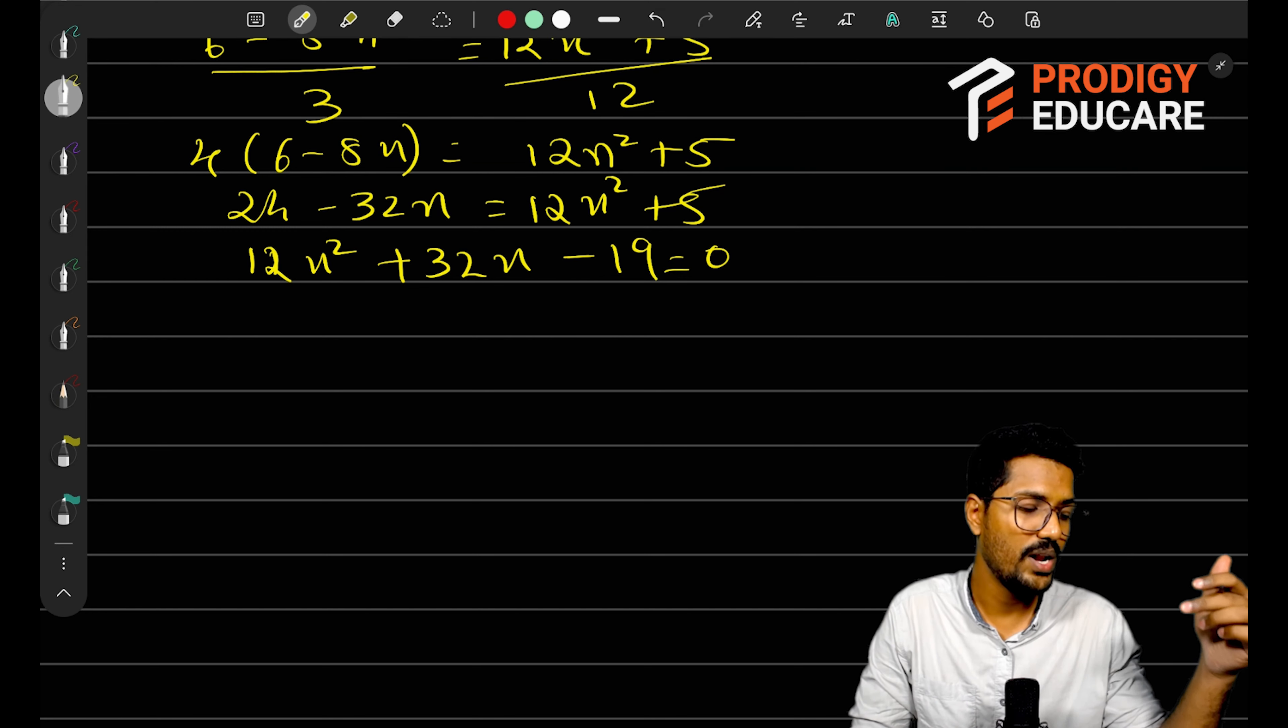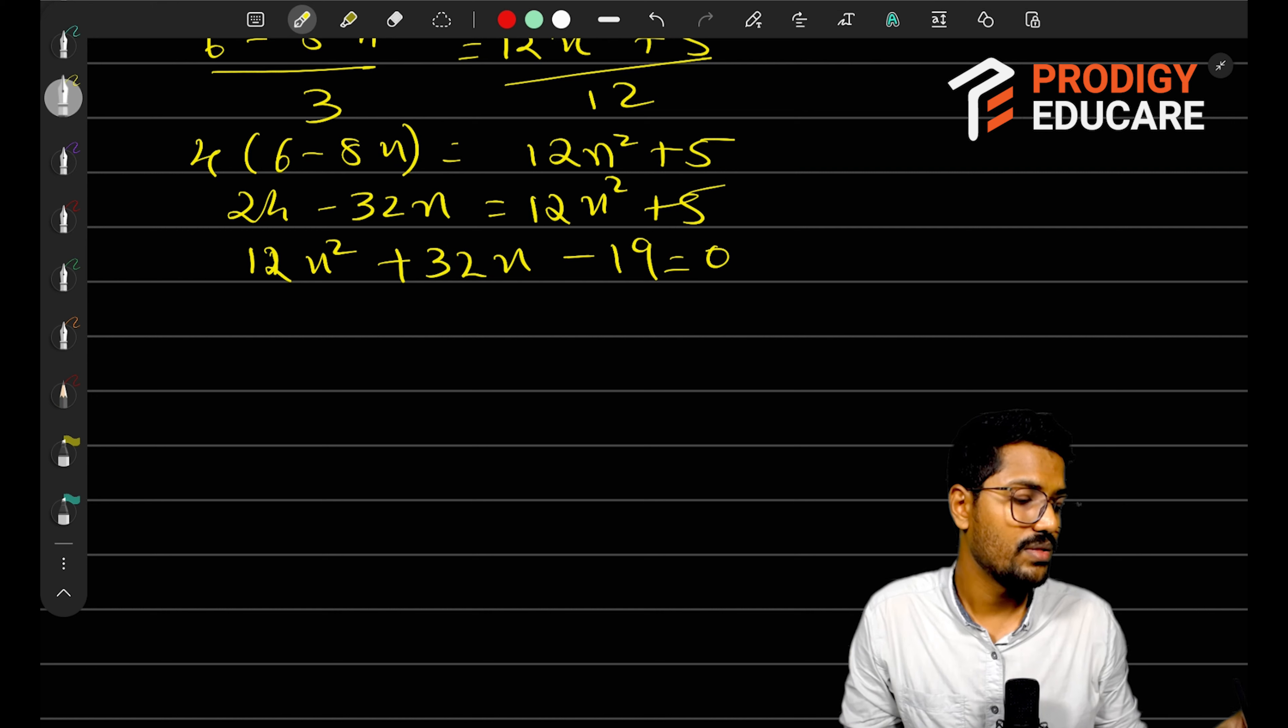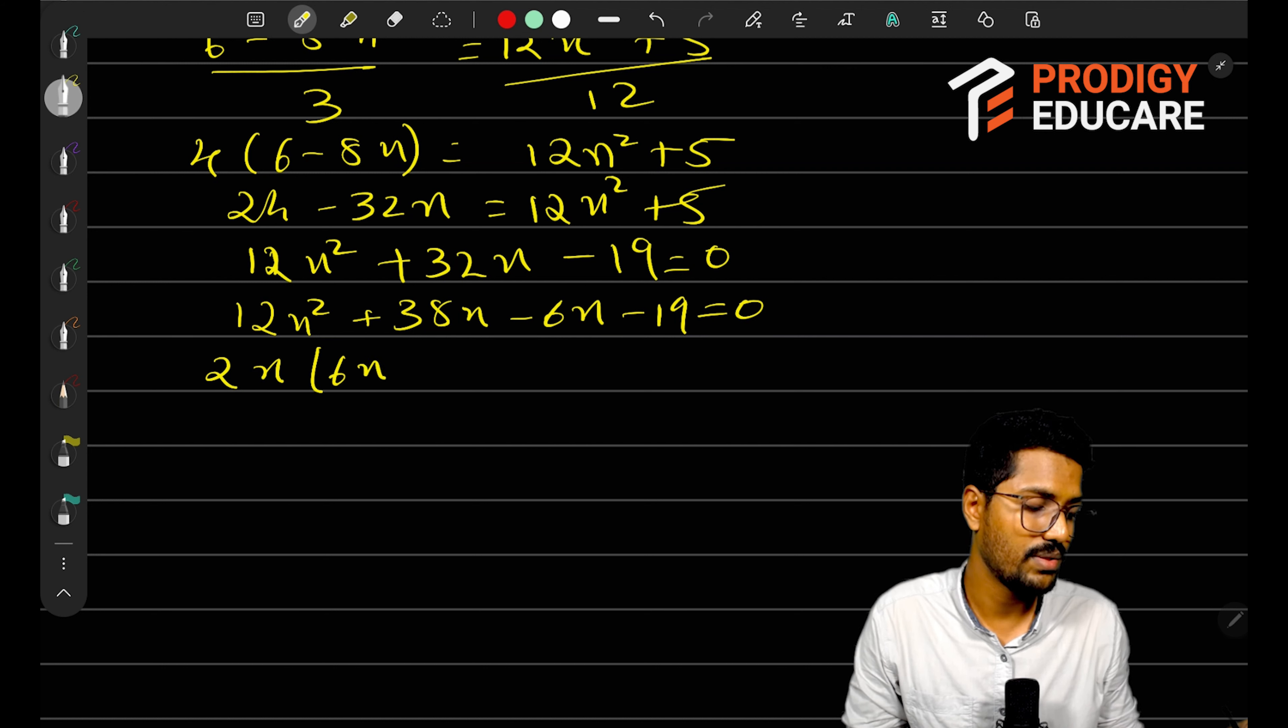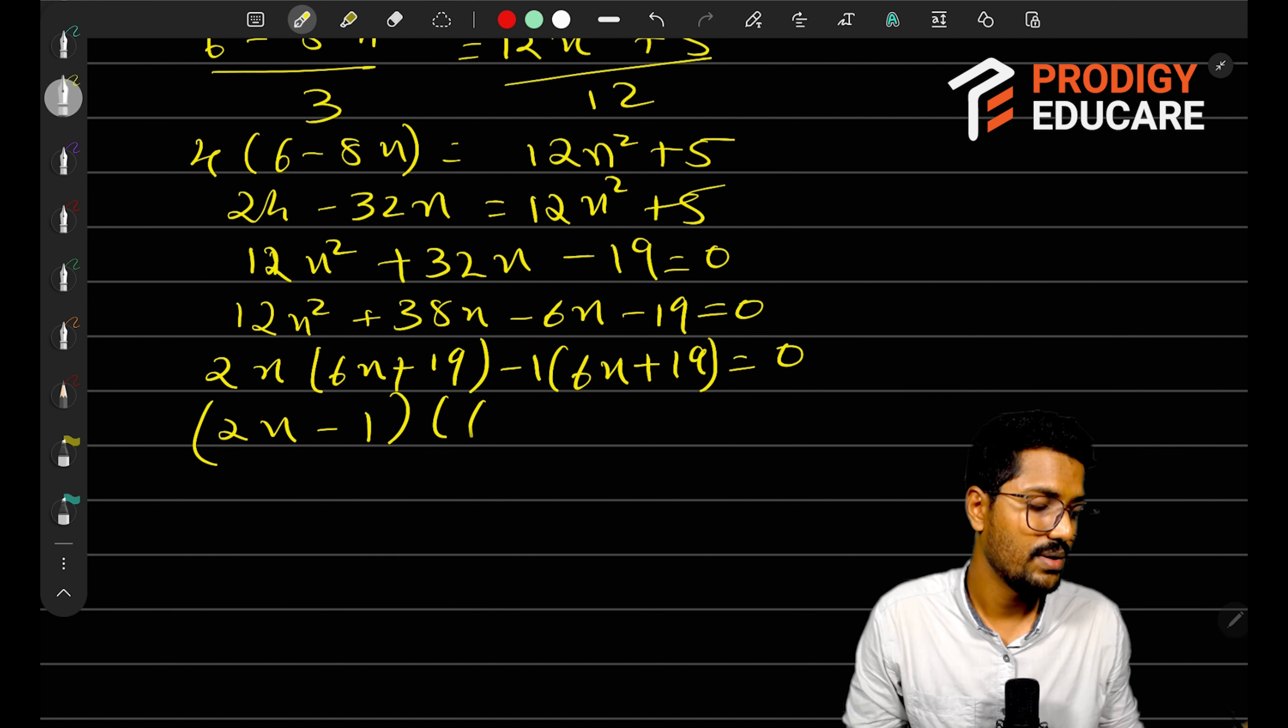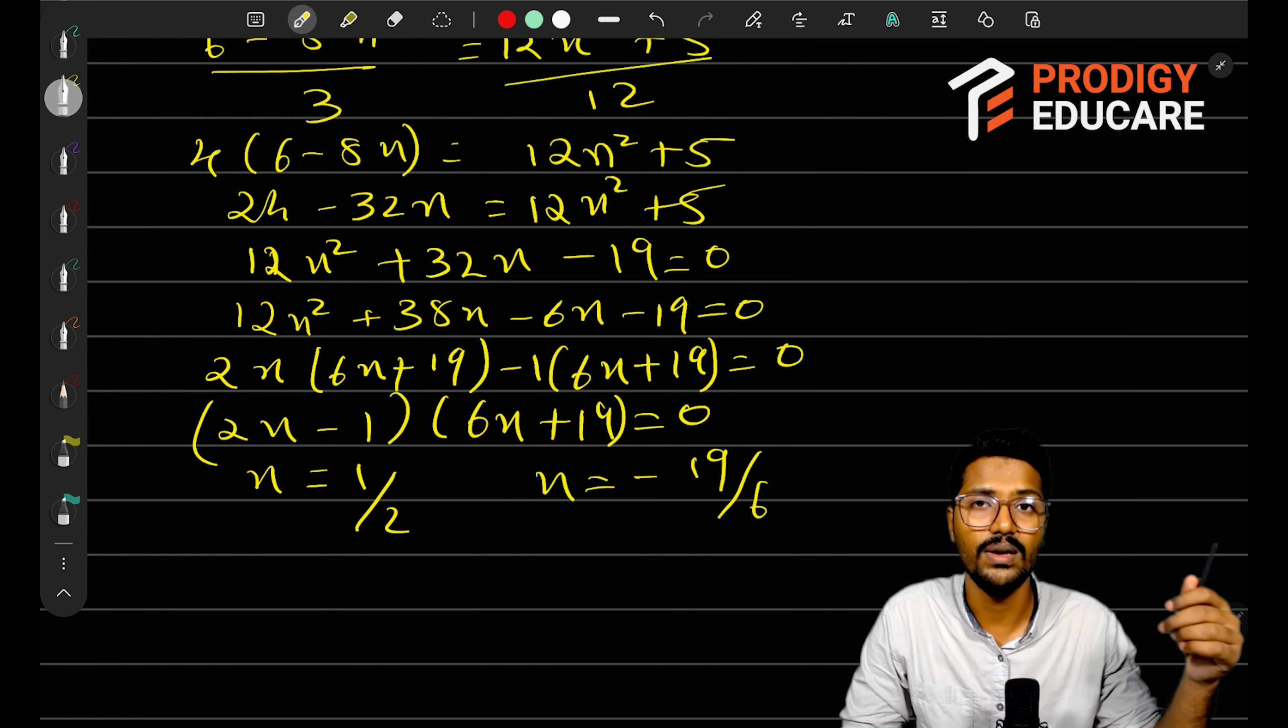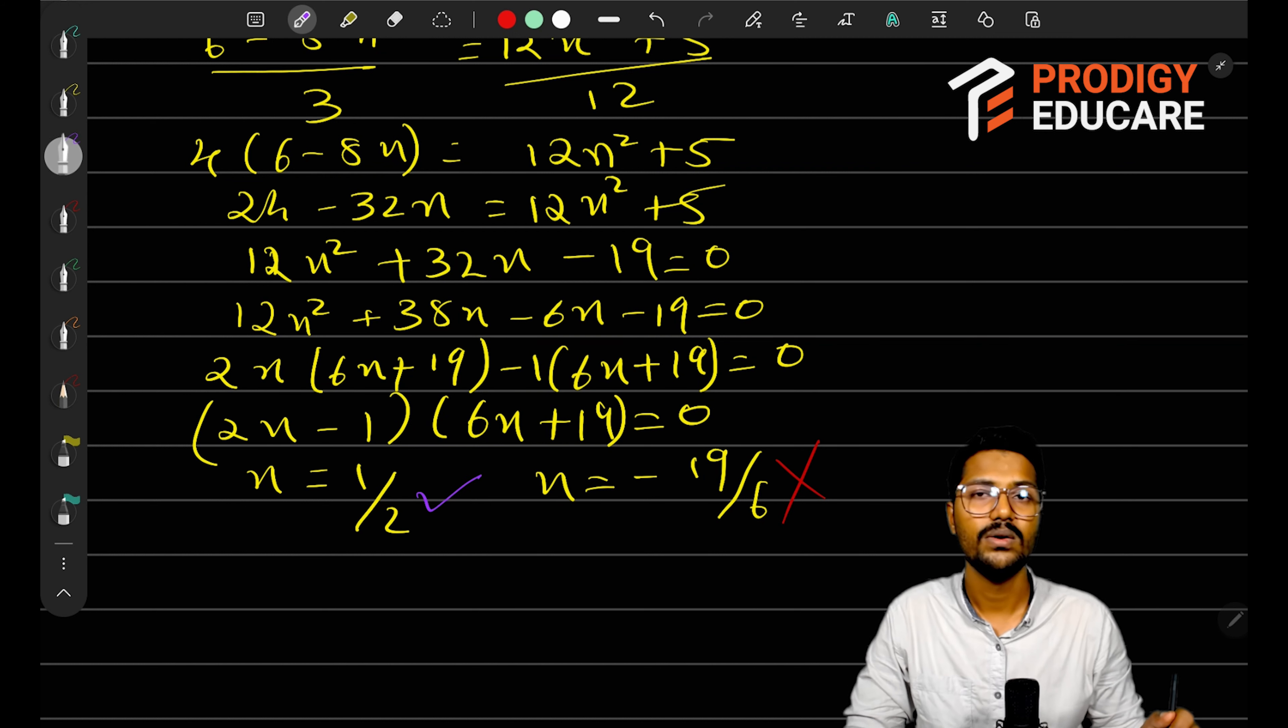Let's factor this: 12 and 19, which gives 32. We can easily say 38 and 6. So we can write 12x² + 38x - 6x - 19 equals 0. Taking 2x outside, so (6x + 19) minus 1(6x + 19) equals 0. So (2x - 1)(6x + 19) equals 0. Solving this further, x equals 1/2 and x equals -19/6. Obviously, x equals -19/6 is not possible, because I have considered that x is greater than 0. So I will just mark this wrong. The correct one is x equals 1/2.